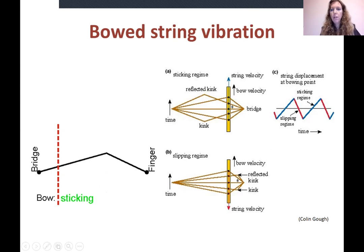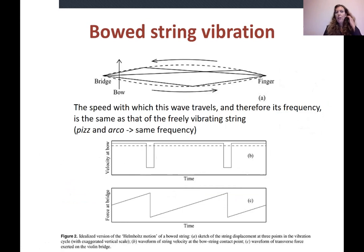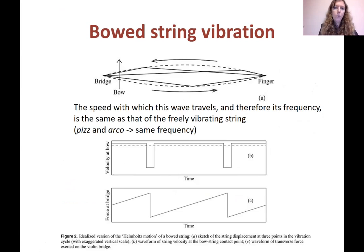If you look at the string displacement at the bowing point, you have a slipping regime followed by a sticking regime — it goes one way when it sticks and then slips more abruptly. The speed with which this kink travels determines the frequency, which is the same as that of the freely vibrating string. That's why, as you all know, if you play pizzicato or arco you have the same frequency.